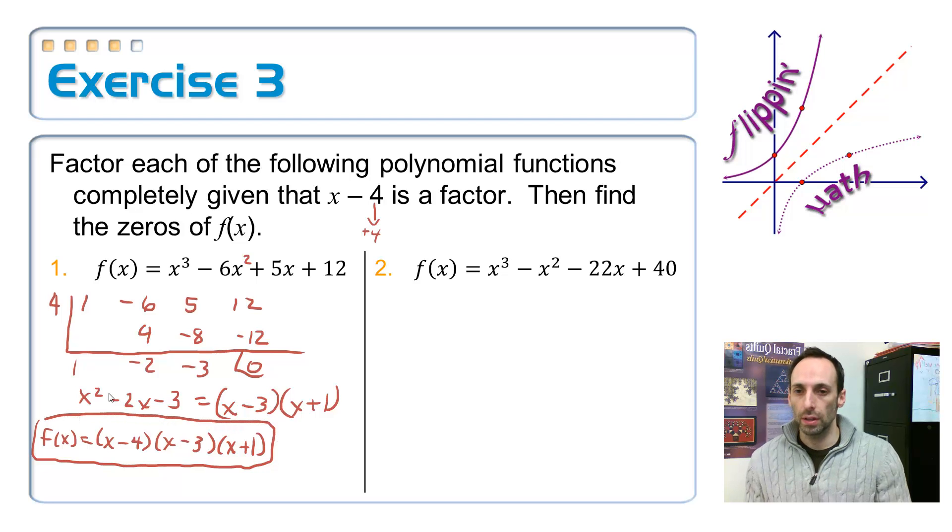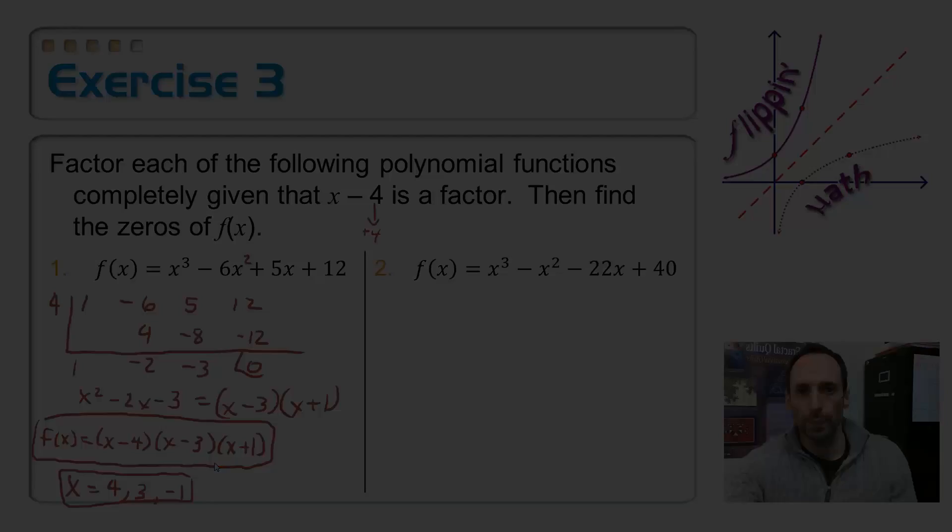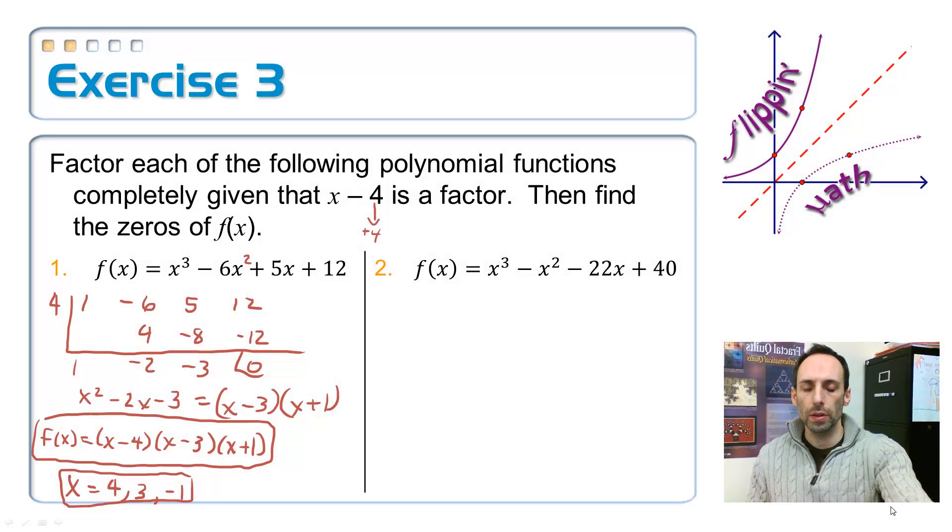And then finally, the last part of this is to find all the rest of the zeros. There should be three of them here, one for each of these parentheses. So the zeros, x equals 4 from the first one, 3 from the second one, and negative 1 for the last one. All right, there we go. Take a look at that number 2. I want you to try that one all on your lonesome. Pause that video.